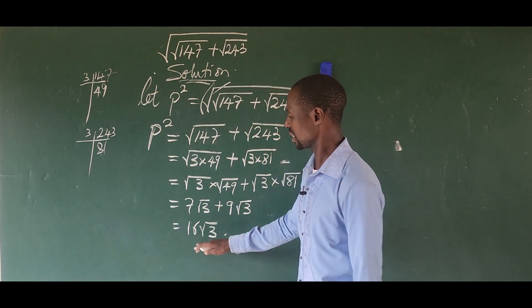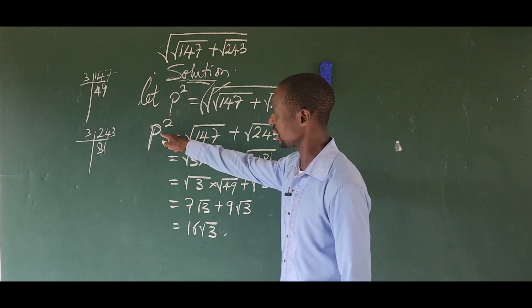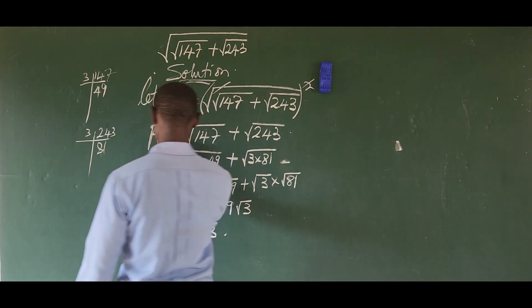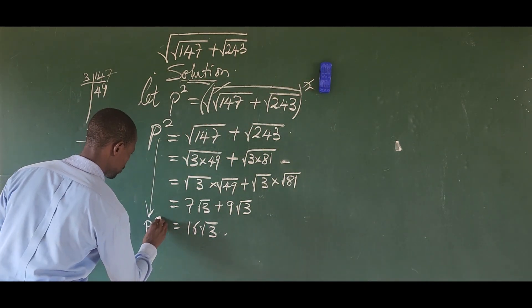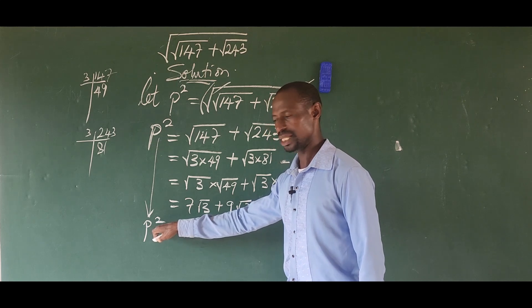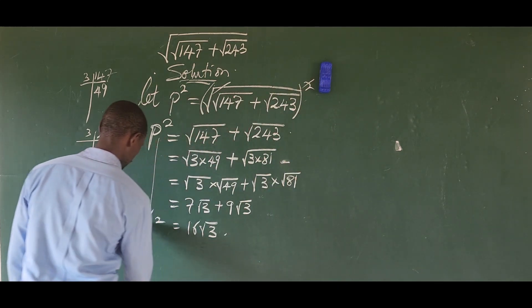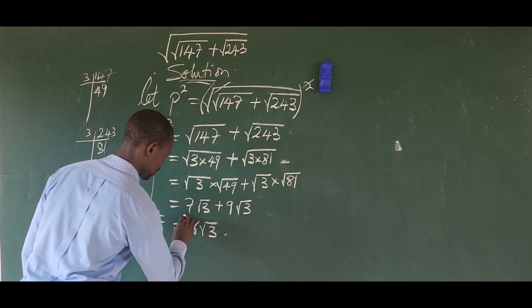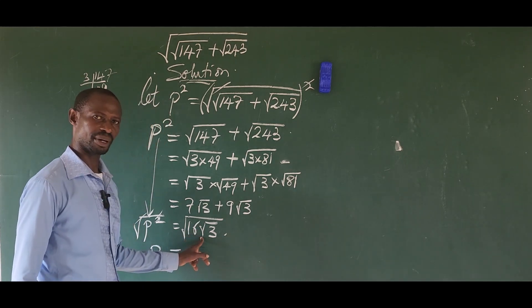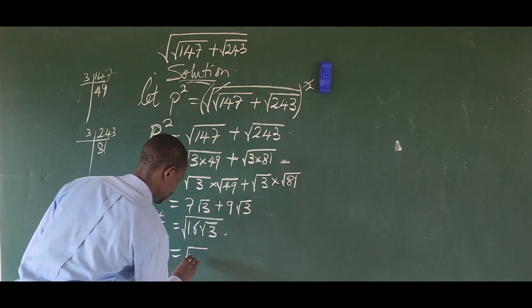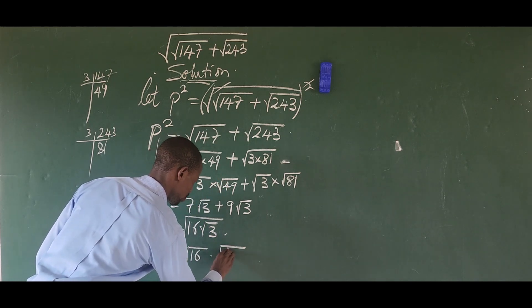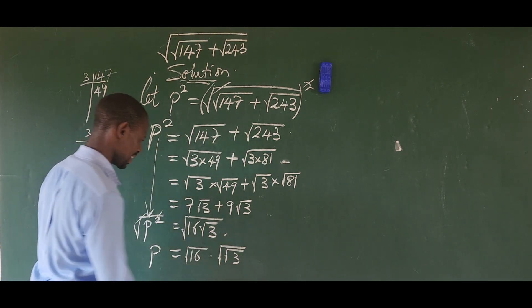So p squared equals 16 root 3. This is our simplified form, but remember we made the substitution that gave us p squared. We want to eliminate the square, so we take the square root of both sides. This gives us p equals the square root of 16 times the square root of the square root of 3.